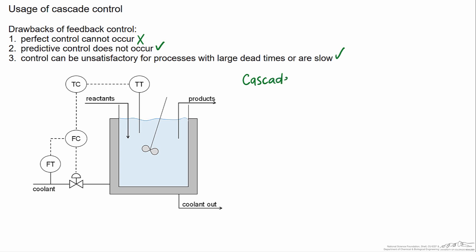So cascade control can best be approximated as the idea of feedback control loops in series. And to exemplify this we have a jacketed reactor on the diagram where the desired variable to control here is the temperature inside the reactor. So this is our controlled variable.